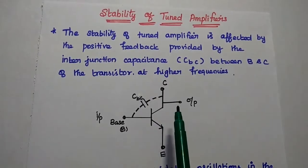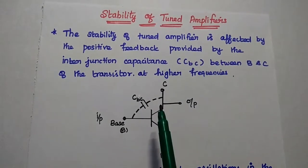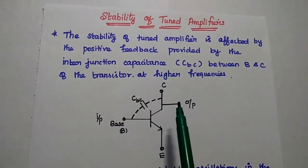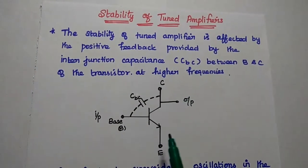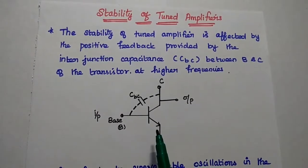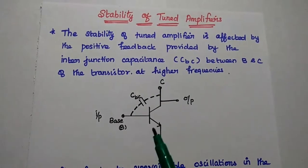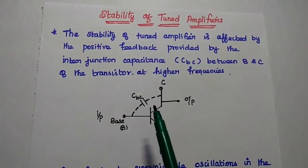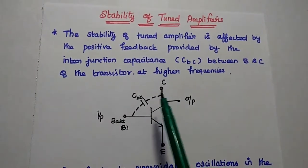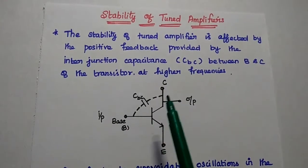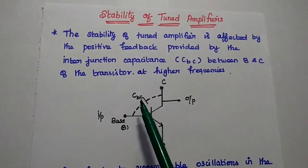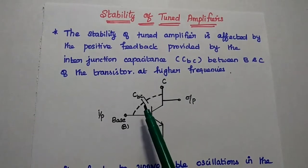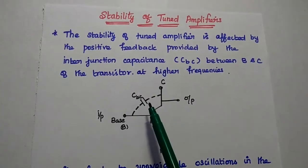In this tuned amplifier, the stability is getting affected by the interjunction capacitance. The transistor used in the tuned amplifier circuit has an interjunction capacitance between the base and collector, that is CBC. At higher frequencies, this interjunction capacitance becomes very low, meaning it can act as a short circuit.